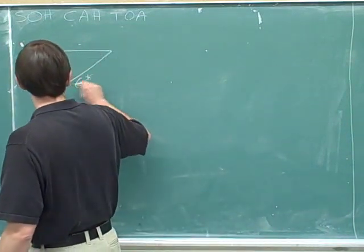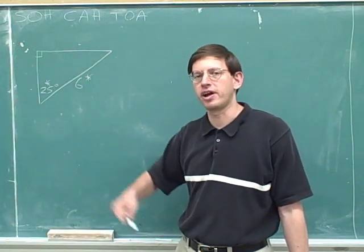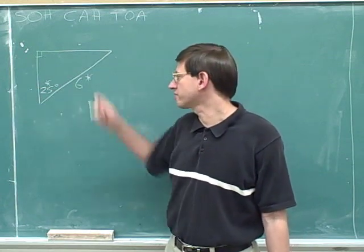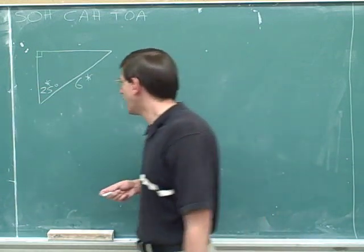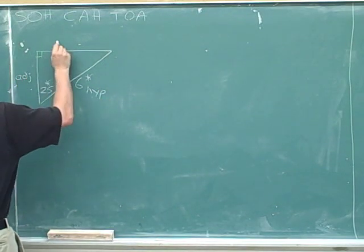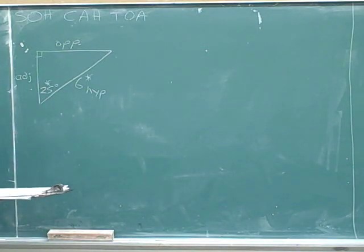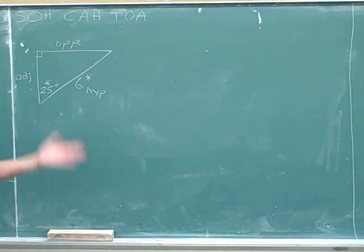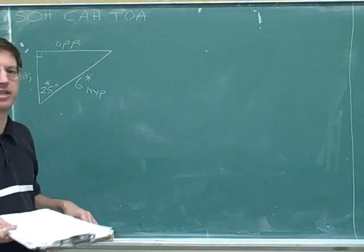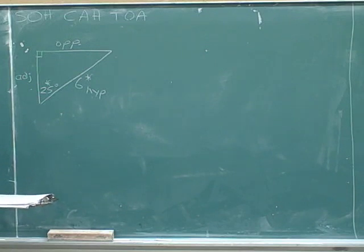Let's use asterisks to keep track of the information we were originally given, because the convention is that we're going to try to figure out everything else using the information we were originally given. Now we can label the hypotenuse and the adjacent and the opposite sides. You might notice that on the previous problem, the adjacent side was horizontal, but in this problem the adjacent side is vertical. So we just have to be flexible and adapt to whatever the details of the problem are — sometimes the adjacent side is horizontal, and sometimes it's vertical.